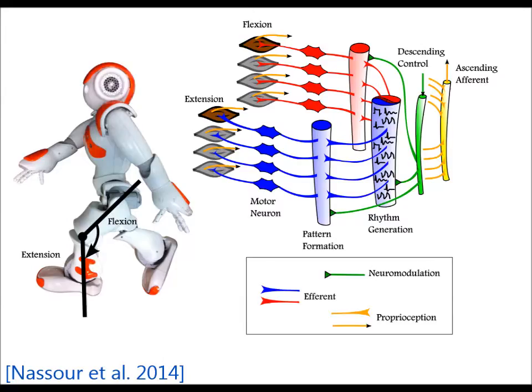The multi-layered multi-pattern central pattern generator is an extended mathematical model of the central pattern generator in the spinal cord of vertebrates. It can generate different motion patterns by varying only a small number of parameters.